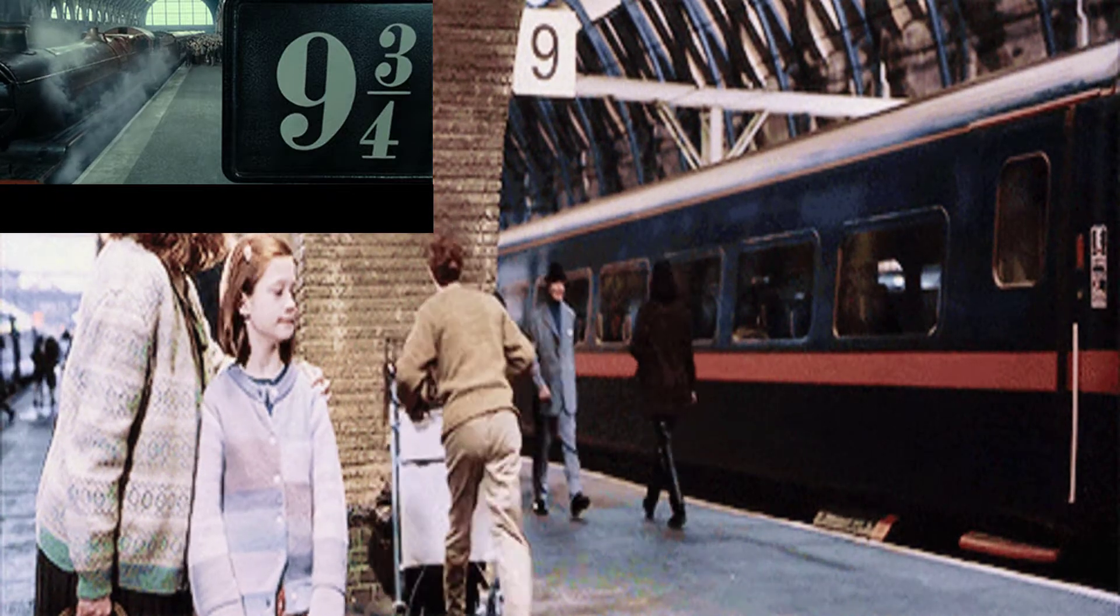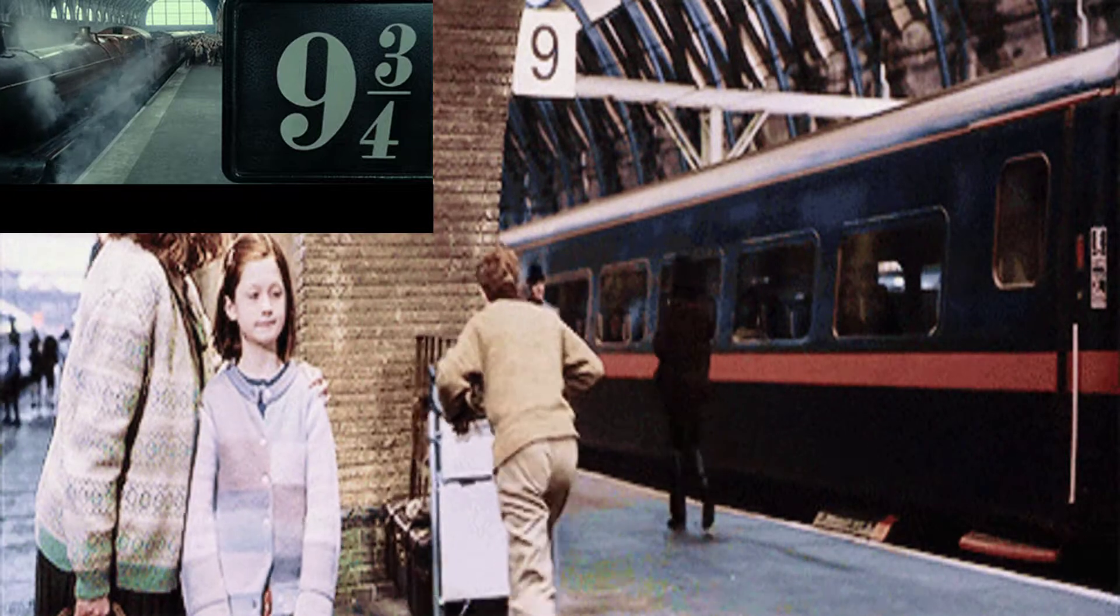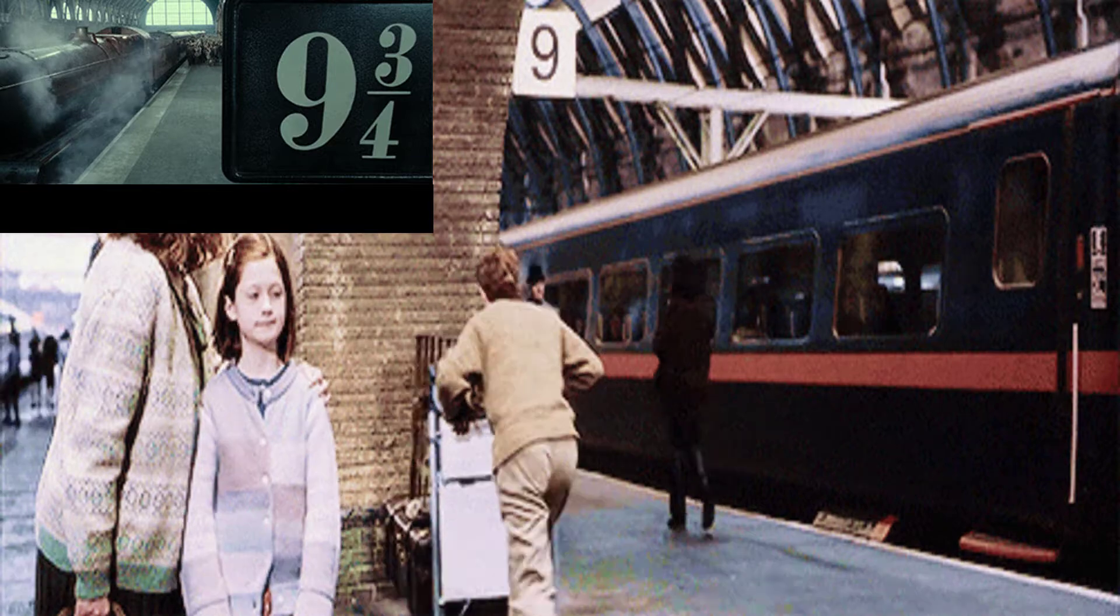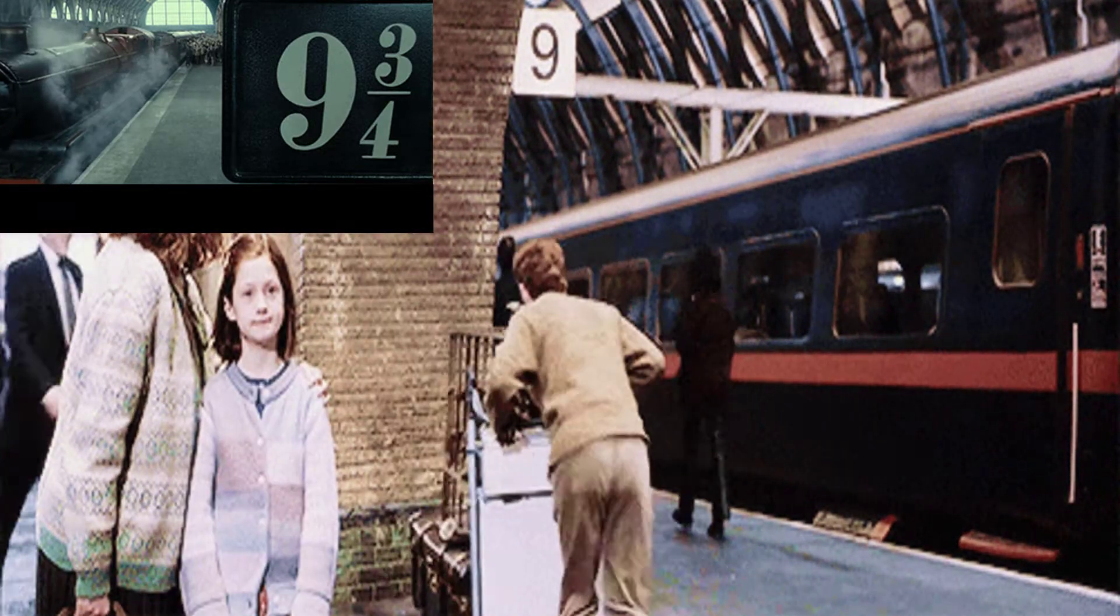Or if you take an example of railway station, your train can arrive in platform number one, two, three and so on. Like in Harry Potter, it won't arrive at platform number nine, three by four.